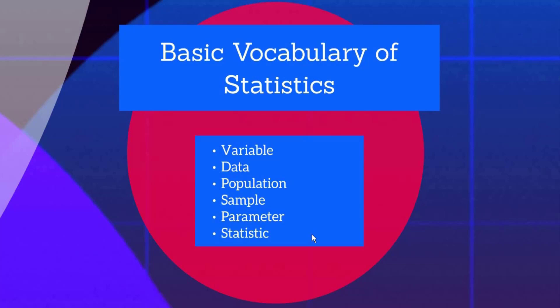So, let us look at some basic vocabulary of statistics. So you have got a population, there is something called a sample and there is something called a parameter and there is something called statistics. So, what do you think? What is population? Just think for a while. What is population?